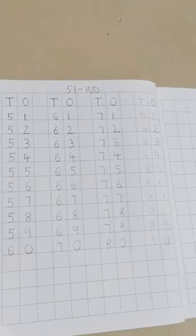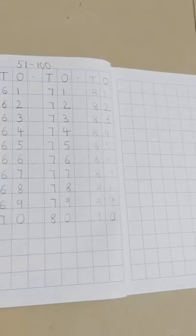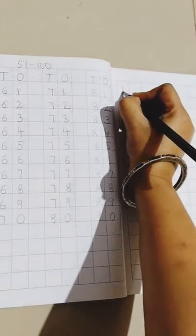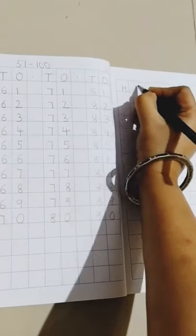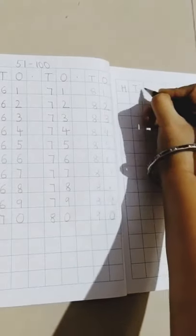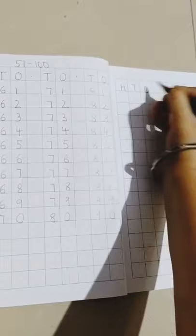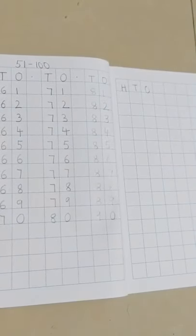Now is there place in this page? No. So we move to the next page. So now in the next page, first we are going to write H-T-O. H stands for hundreds, T for tens and O for ones. So will we write in the hundreds column? No, we will not write. We will write from the tens column.